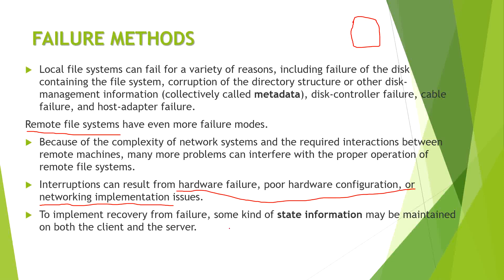To handle these failures, we need to store some state information on both the client and the server. The client saves the state of the server — how it is giving responses — and the server also saves state information about how the client is requesting files. This is the method by which we can handle failures among file accessing techniques.